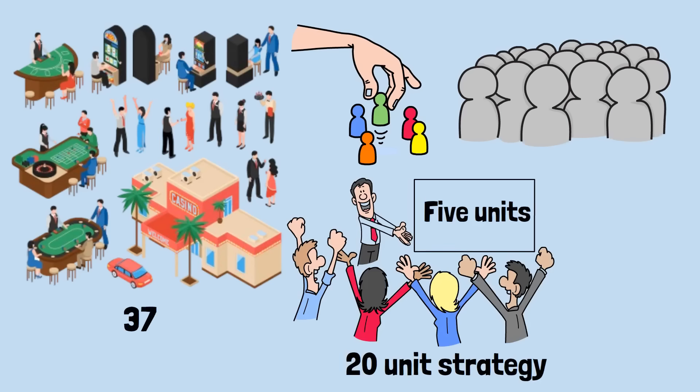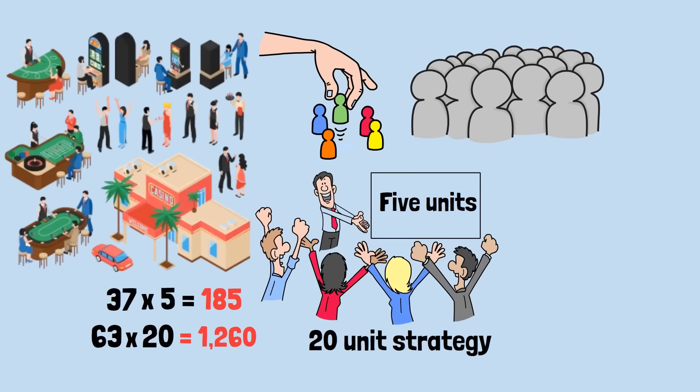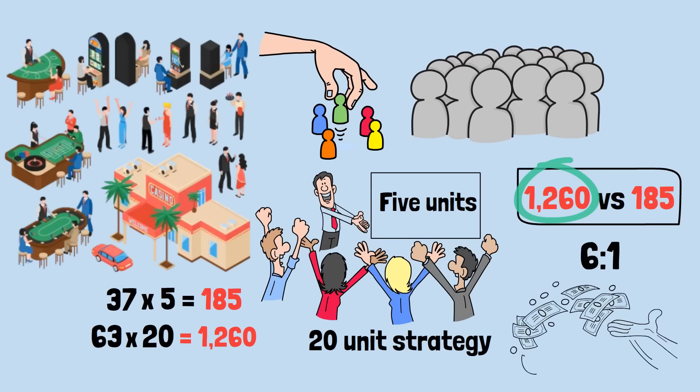Let's examine what happens when 100 people each try to win 5 units using the 20-unit strategy described above. Approximately 37 people will succeed, each winning 5 units, a total of 185 units won. But the remaining 63 people will lose their entire 20-unit bankrolls, a total of 1,260 units lost. The math is stark: 1,260 units lost versus 185 units won. The total losses exceed the total wins by more than 6-1.